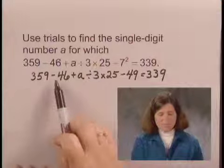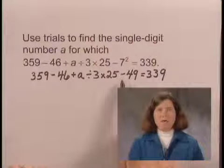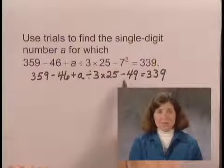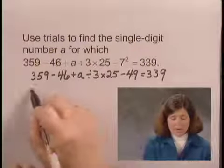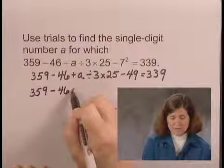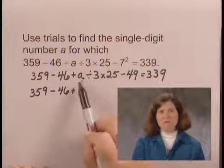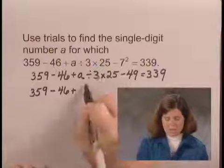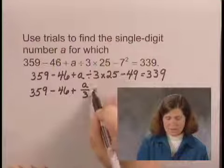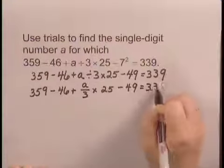Now as I look through, I have operations of subtraction, addition, division, multiplication, subtraction. I want to do all multiplications and divisions in order as they appear from left to right. Again, I'll copy 359 minus 46 plus, here's my first operation, A divided by 3, or my first division or multiplication. So I'll write that as A divided by 3 times 25 minus 49 equals 339.